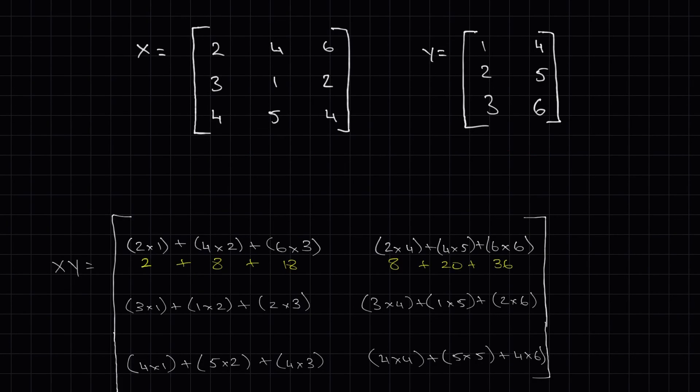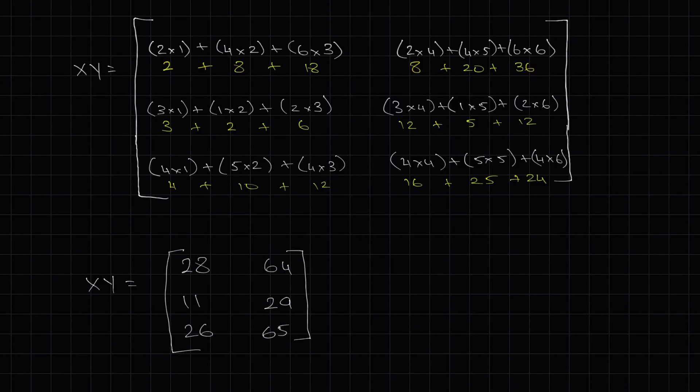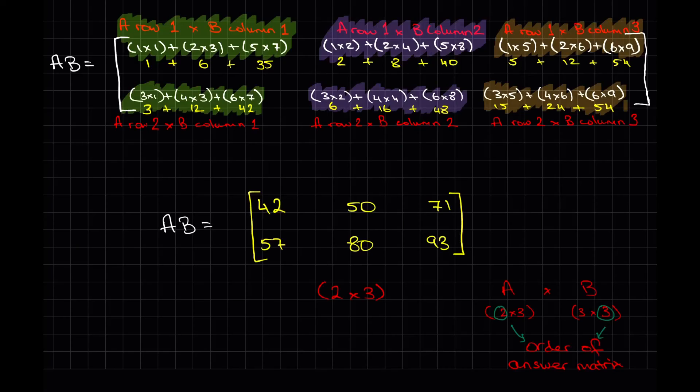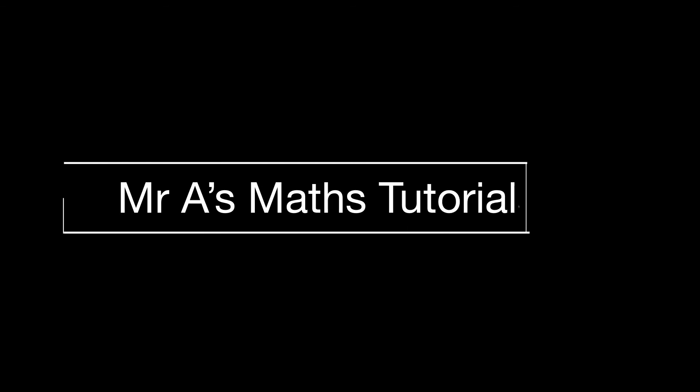Now we would simplify each individual calculation, work out each little bracket and simplify until we have our answer. So like we've seen, multiplying matrices without the use of technology can get a little bit messy, but it's not complicated as long as we pay attention to where the numbers are going and where they're coming from.